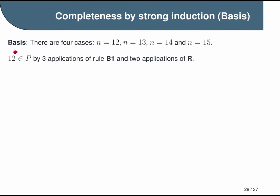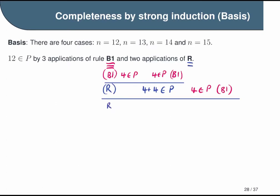For the first case, we need to show that 12 is in the set P. We do this simply by deriving it using the rules of the post system. To derive 12, we start with two applications of rule B1, which says that the number 4 is in the set P. Then we use rule R to say that 4 plus 4 is also in the set P. We use rule B1 another time to get another 4, and then finally use rule R a second time to show that 4 plus 4 plus 4 is in the set P. Therefore, we've shown that 12 is in P.